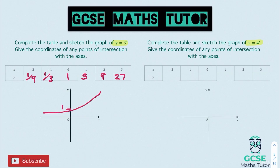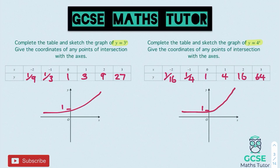For y = 4^x: 4 to the power of negative 2 is 1 over 16. 4 to the power of negative 1 is 1 over 4. 4 to the power of 0 is 1. 4 to the power of 1 is 4. 4 squared is 16. And 4 cubed is 64. Drawing the sketch, both sketches look similar because we're not drawing to scale — we're just showing the direction it slopes in and that it crosses the y-axis at 1.